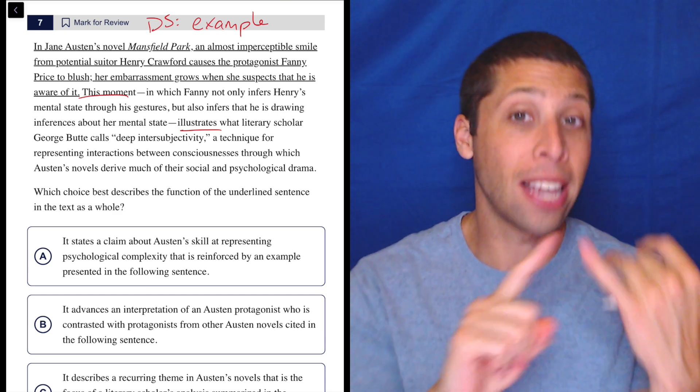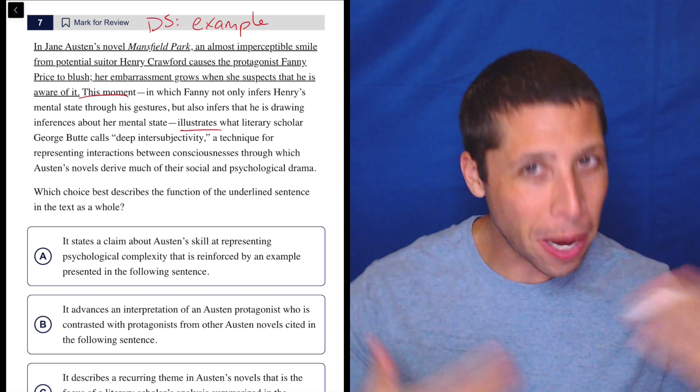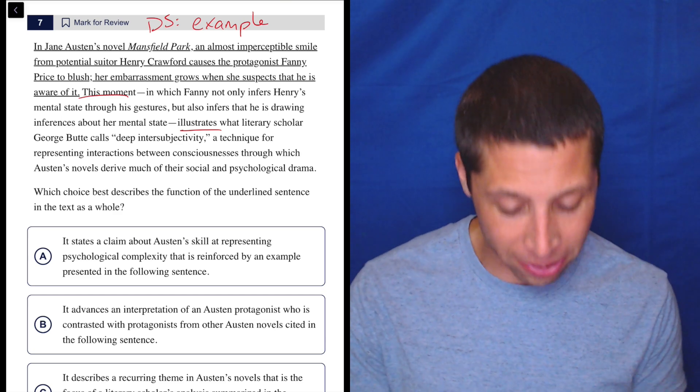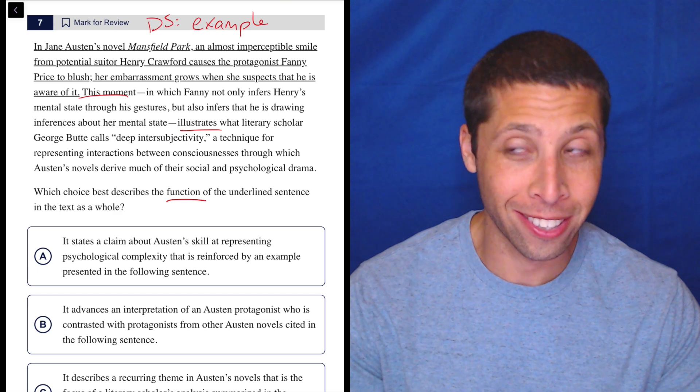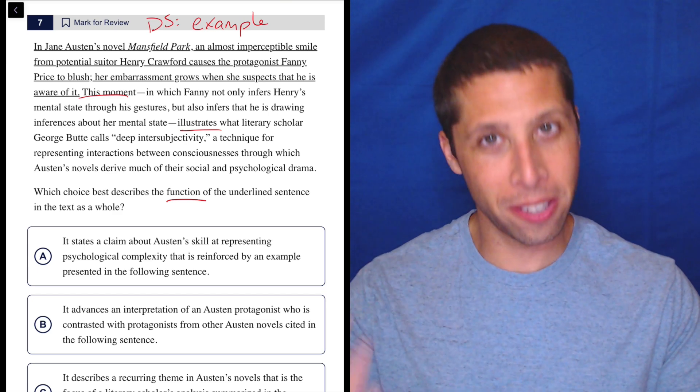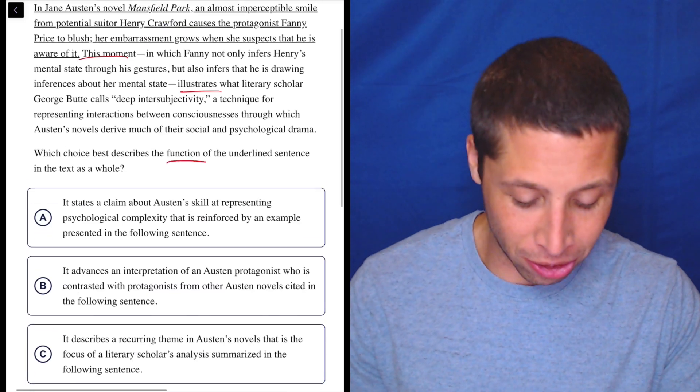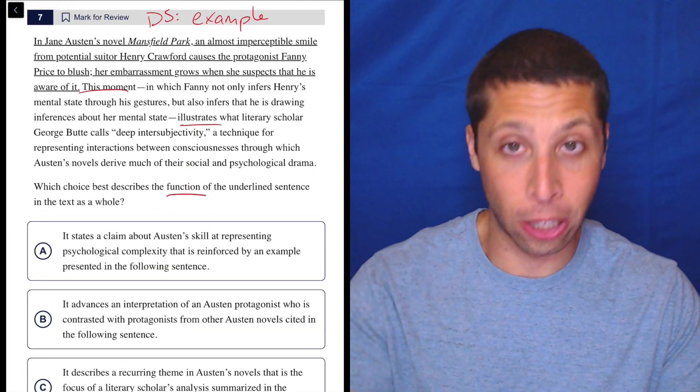You've noticed how my dumb summaries are basically predicting the purpose, and things like example or contrast or term and definition keep coming up. Those are very common purposes or functions for these underlined sentences. So it's not surprising that we keep seeing the same thing. Obviously the choices and passages keep changing, but still, that's helpful to think of it as an example. So let's take a look.